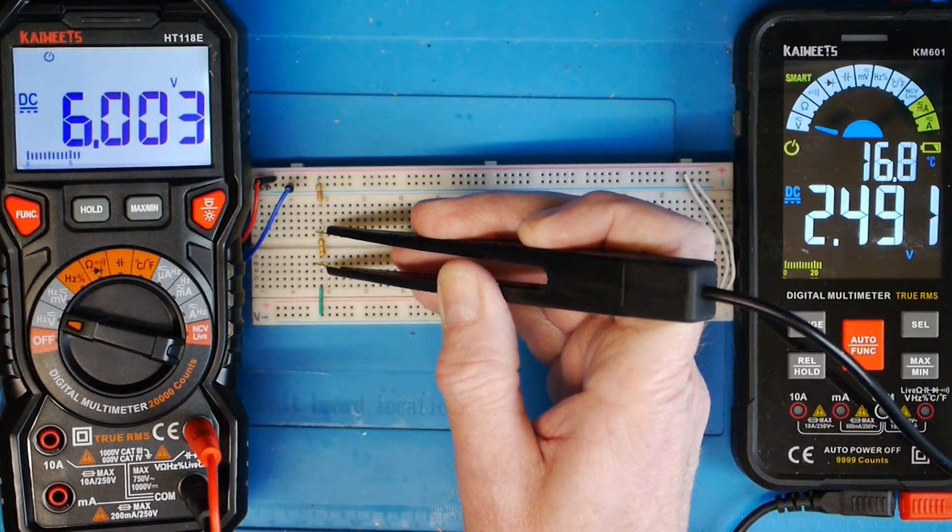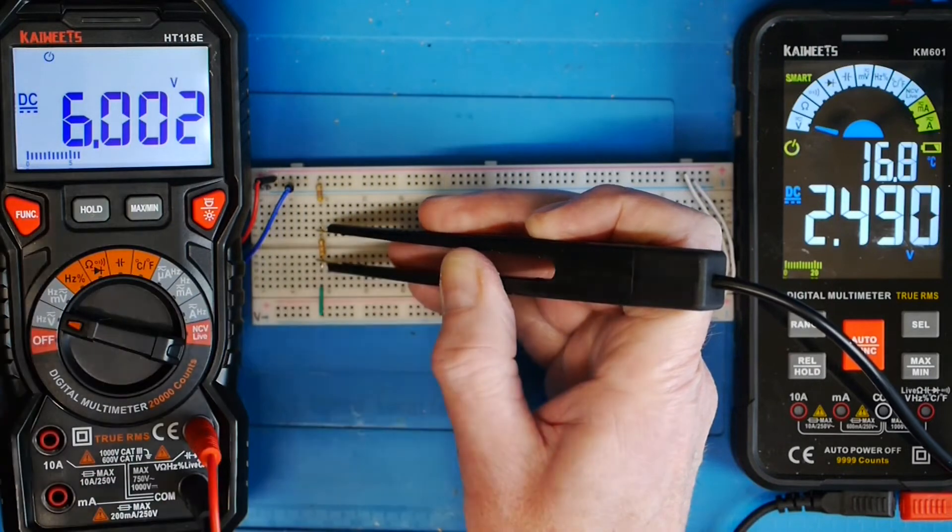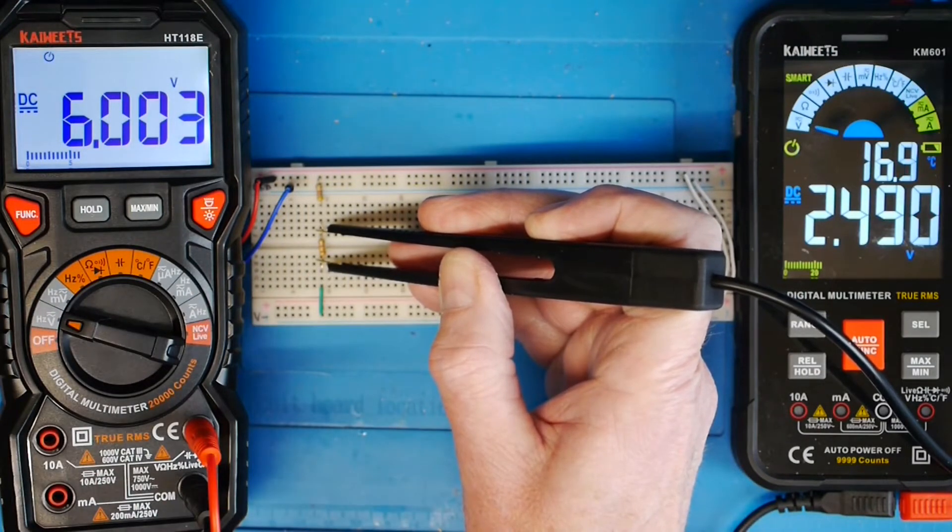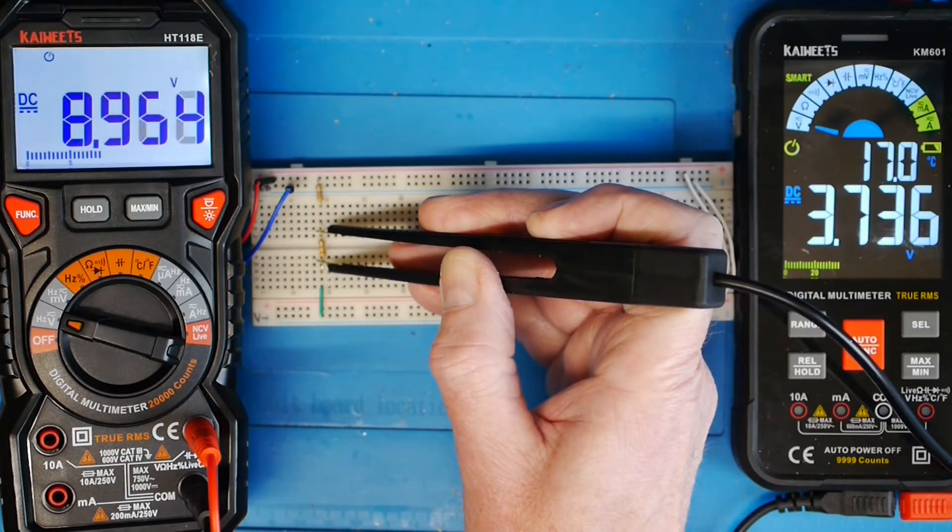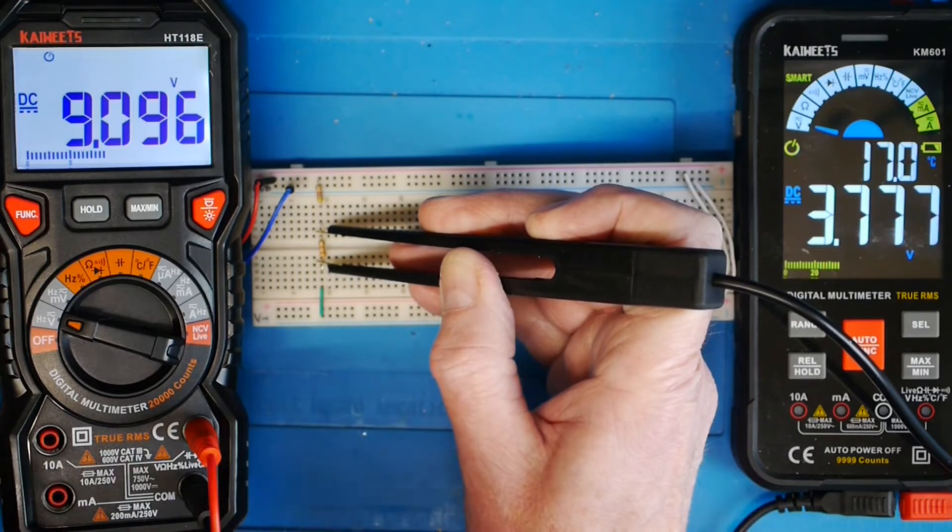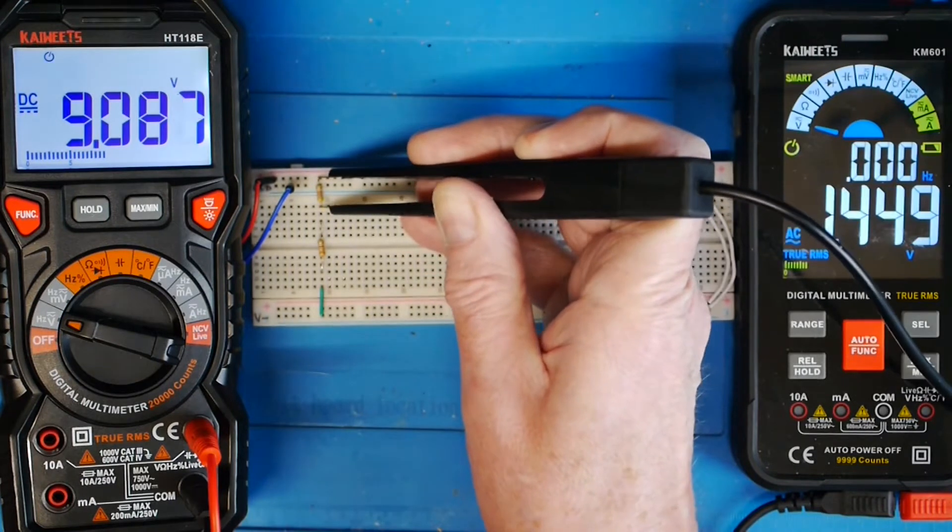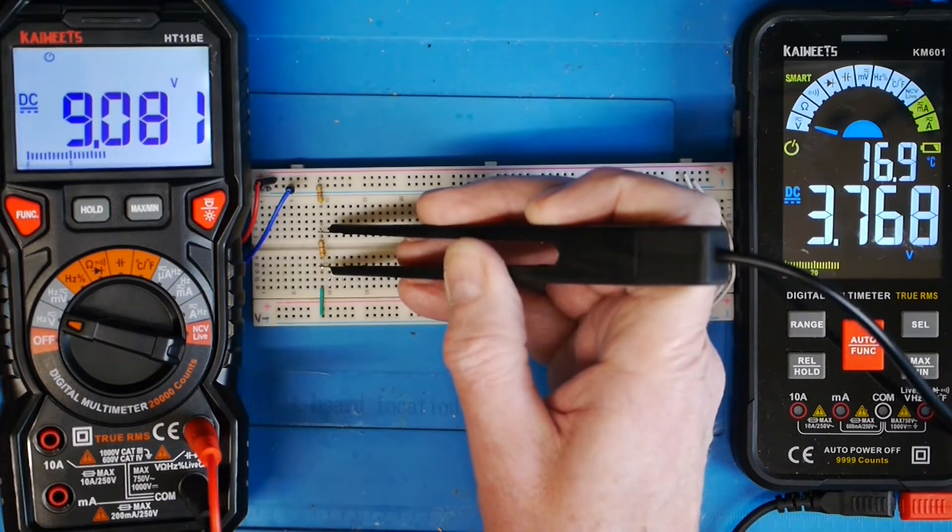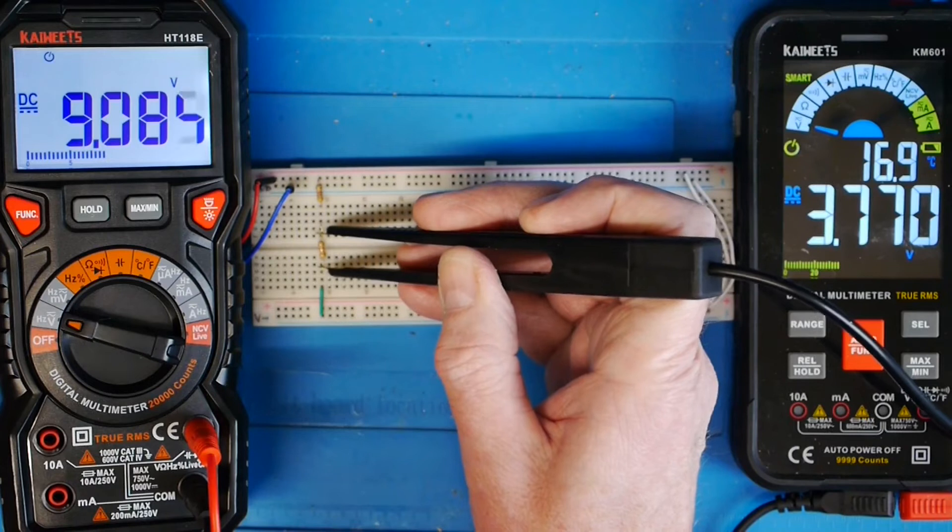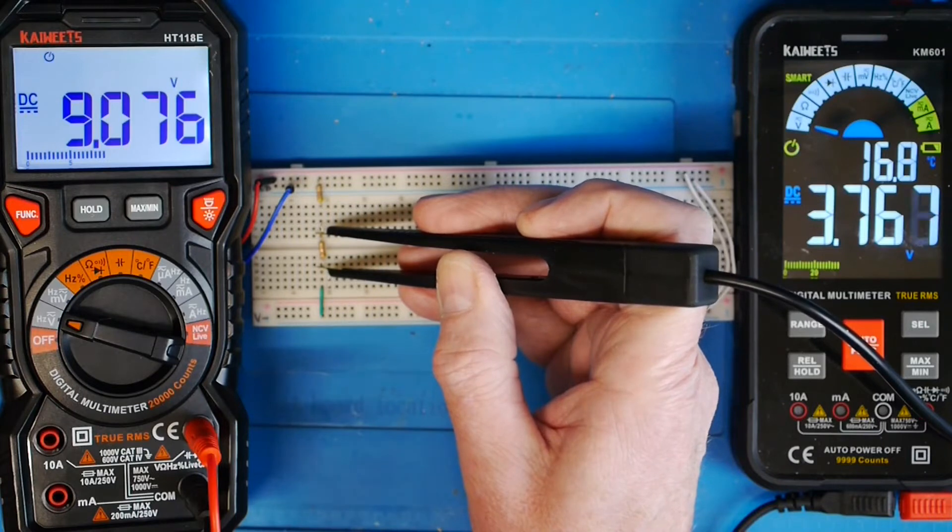Now it isn't regulating the voltage. Let's quickly increase the supply voltage to nine volts. There's nine, and you can hopefully see we've now got 3.7, and across this one, unsurprisingly, we're going to have 5.2. If you want to do the maths, you'll find they both add up to nine. So this divides the incoming voltage; it doesn't regulate it.